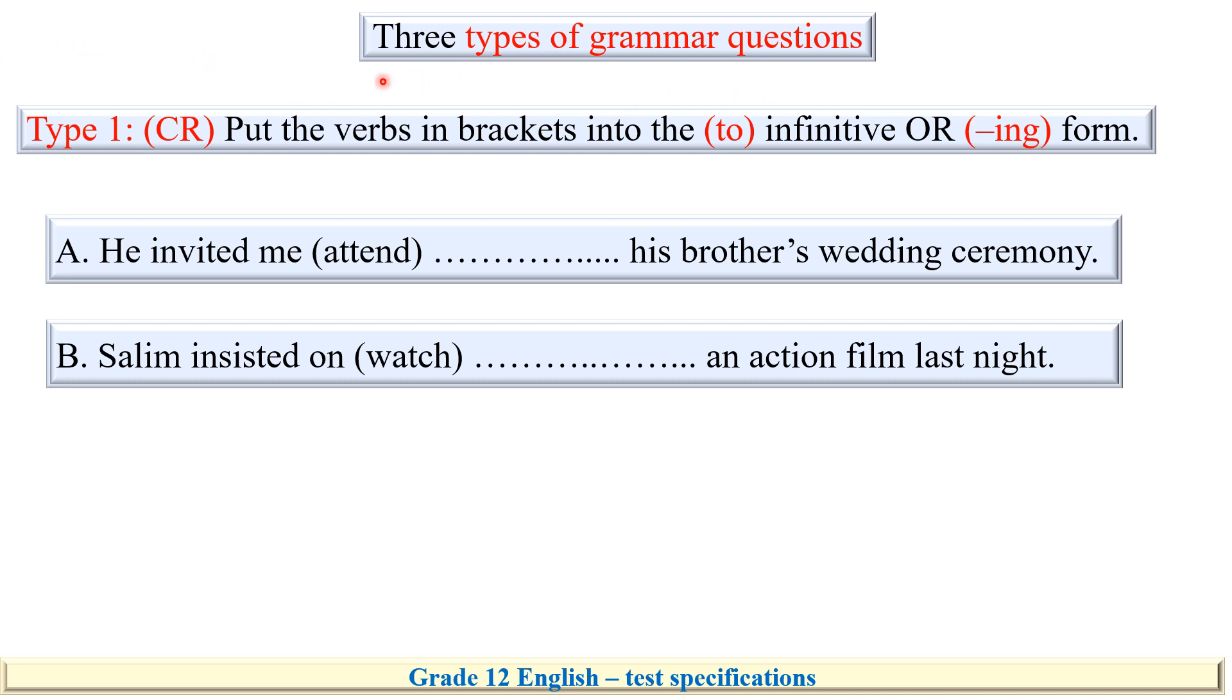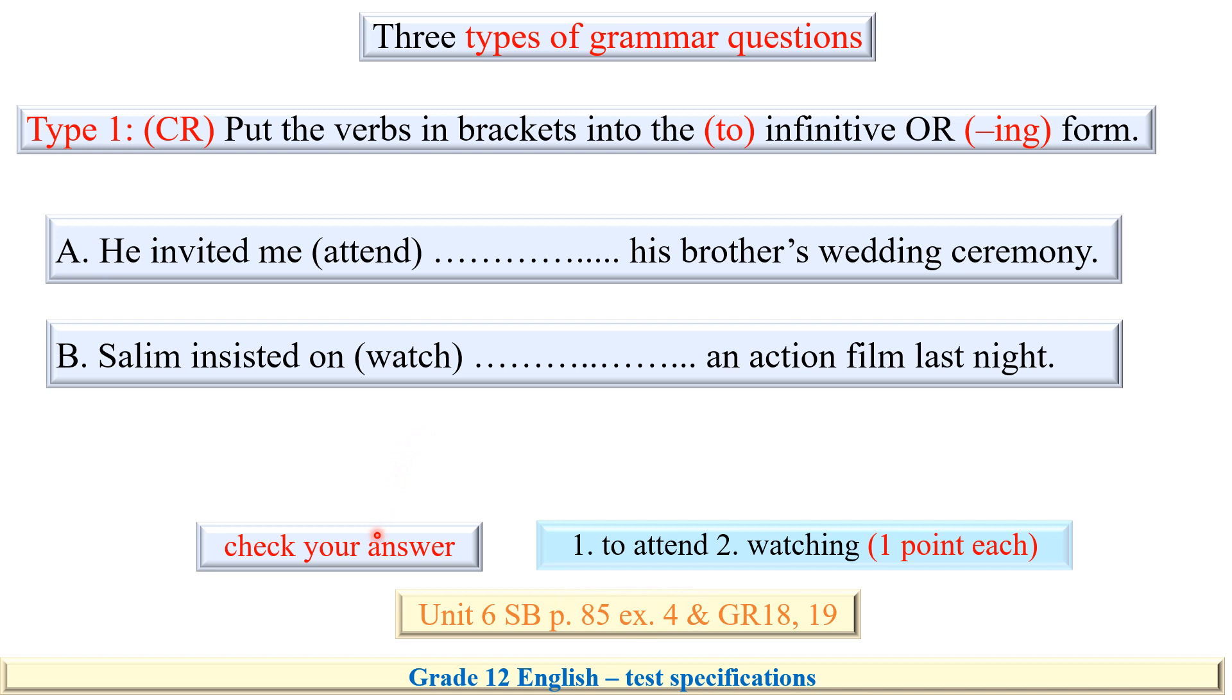As for the grammar section, you will be given three types of questions. Type number one is to put the verbs in brackets into to plus infinitive or -ing form. You'll be given two sentences, two verbs between brackets. What is the correct form to use right here? He invited me - after the verb invite do you use he invited me to attend or attending his brother's wedding ceremony? This is the question. Salim insisted on - insist on is followed by to plus infinitive or -ing form? I think it's very easy right, this is the grammar of the second part of unit six.